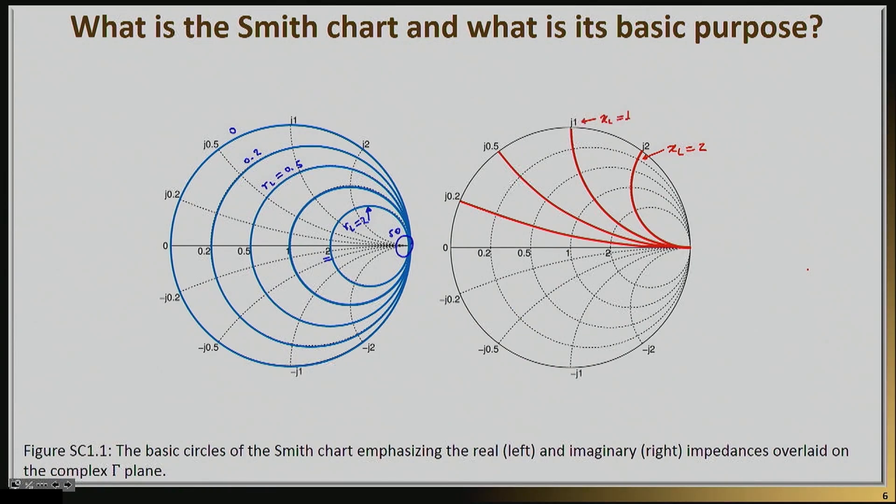Now you might say, why have you not plotted the entire circle? Why did you only plot the part of it? Well the answer to that is because I am basically plotting only what is contained within the gamma L less than 1 circle.